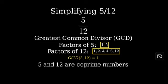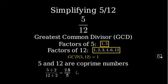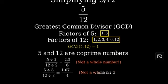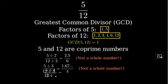Let's verify this by trying to divide both the numerator and denominator by some numbers. If we try to divide by 2, 5 isn't divisible by 2. If we try 3, 5 isn't divisible by 3. And if we try 4, neither 5 nor 12 is divisible by 4.